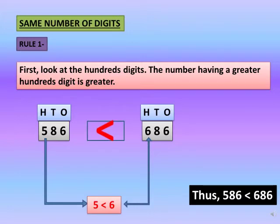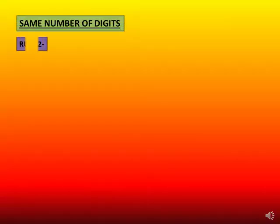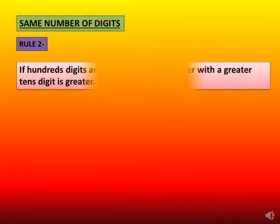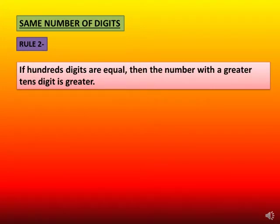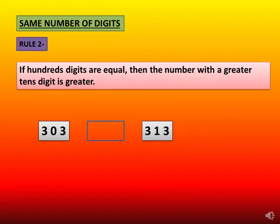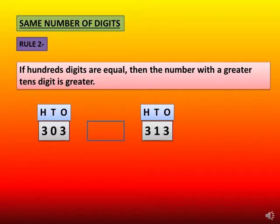Thus we put the open side of this sign towards 686. Rule 2: If hundreds digits are equal, then the number with a greater tens digit is greater. To understand this, let us compare 303 and 313. As the digit at hundreds place is equal, that is 3 equals 3.